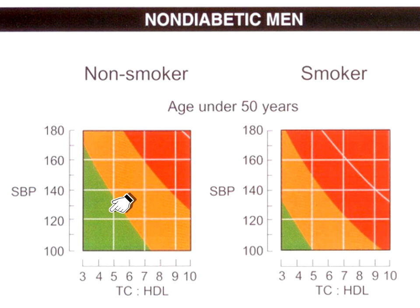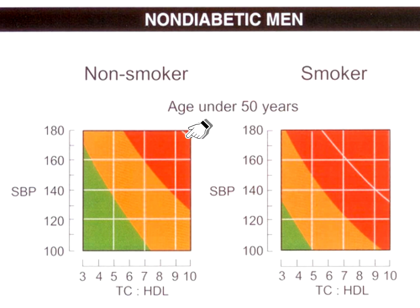Green — 10-year risk less than 10%. Amber — caution — 10 to 20% over the next 10 years. Red — danger zone — greater than 20% risk. So it's nice and simple. The doctor or the nurse can sit down with the patient and talk them through the risk factors. You can see that smokers are more likely to be in the red zone compared to non-smokers. Looking at the x-axis — the ratio of total to HDL cholesterol — with an increase in this ratio you go from green to amber or red if you're a smoker. And the risk also goes up with systolic blood pressure.